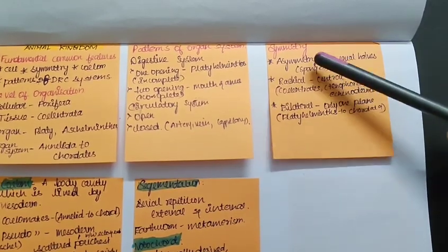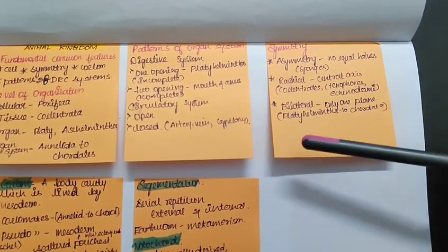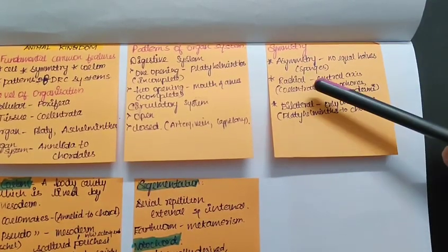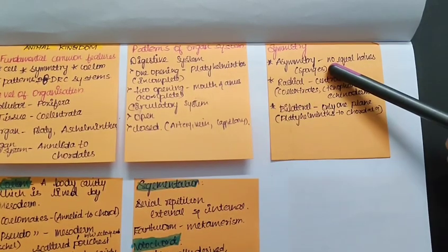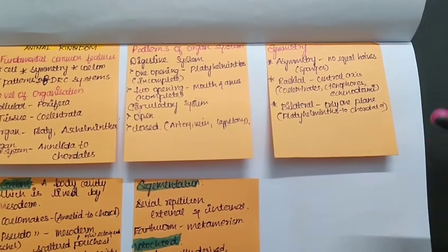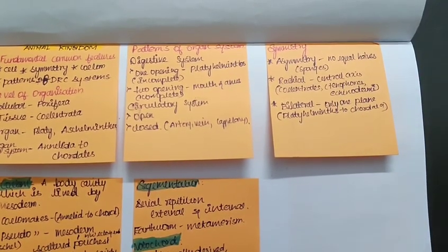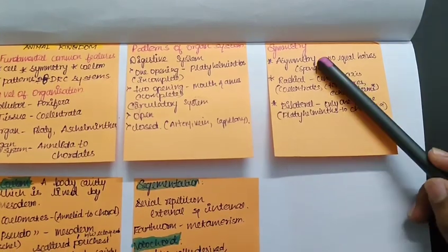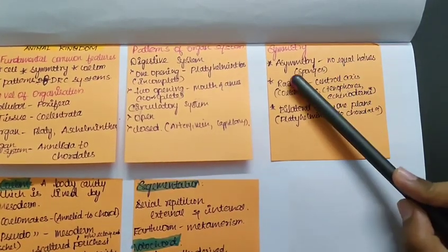Talking about the symmetry, there are three types of symmetry seen in the animals. One is asymmetry, another is radial, and another is bilateral. What is this asymmetry? As asymmetry says, there is no equal halves in whatever plane you cut the individual into. It won't be showing any equal halves, that is asymmetry, and that is seen in sponges.